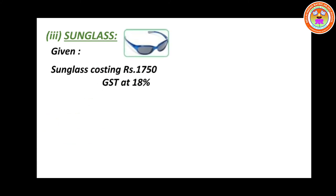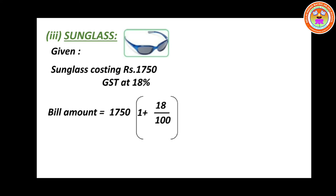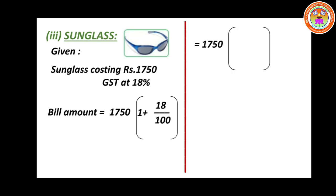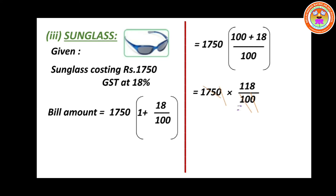Fourth subdivision: sunglasses. The sunglass costing is Rs.1,750 and GST is 18%. Bill amount equals 1,750 into (1 plus 18 divided by 100), that is 1,750 into 118 divided by 100. Cancel 10 and 10, then in the 5 table cancel to get 35. Then cancel 2 and 118 — 59 times. Now multiply 35 and 59. Your final answer is Rs.2,065.